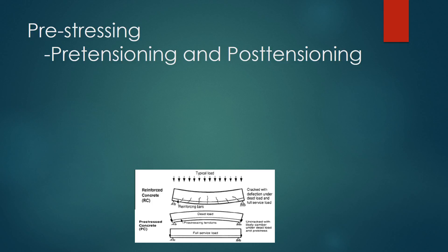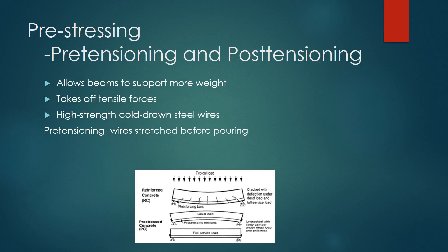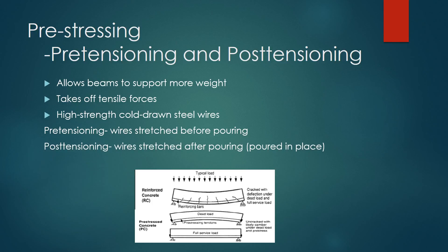Pre-stressing is a system used to make concrete beams support more of a load, by taking off tension forces from the concrete. Usually supported by high-strength cold-drawn steel wires, pre-stressing is accomplished in two different ways: pre-tensioning, where the wires are stretched before pouring and then cut after the concrete is cured to create a stress; and post-tensioning, where wires are stretched after pouring — usually the concrete is poured in place and then tension is applied with hydraulic pumps.